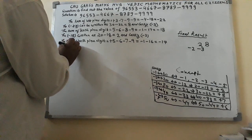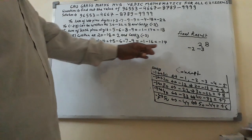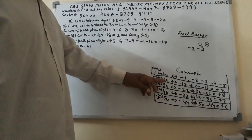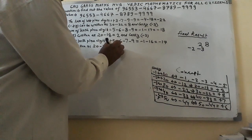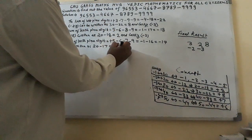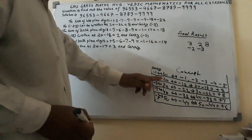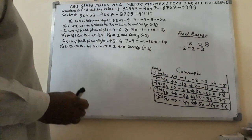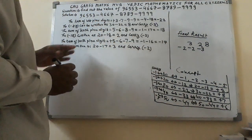So for minus 17: minus 17 consists of 2 digits, 1 and 7, so 17 will fall under 20. Here I shall write 20 minus 17, you will get here 3. So this 3 will be reflected at this place. And carry for 20, carry will be minus 2. Now the 100s place digit is over.